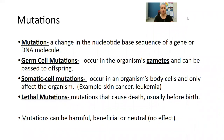So a mutation is a change in the nucleotide-based sequence of a gene or DNA molecule. There are different types of mutations. A germ cell mutation — remember germ cell is another term for the gamete or the sex cell — occurs in the organism's gametes and can be passed to offspring.